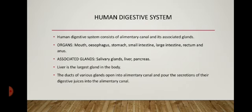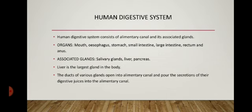The various organs involved in the human digestive system are: mouth (also called buccal cavity), esophagus or food pipe, stomach, small intestine, large intestine, rectum, and anus. The glands present in the digestive system are salivary glands, liver, and pancreas. Salivary glands are located in our mouth. The liver is a reddish-brown gland situated in the upper part of the abdomen on the right side, and it is the largest gland in our body.